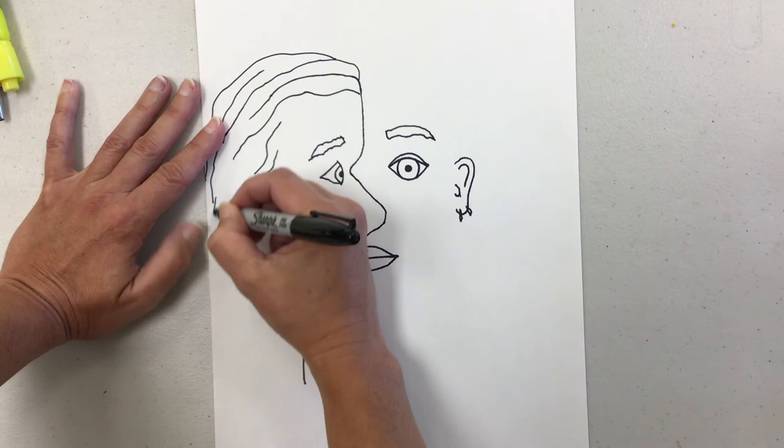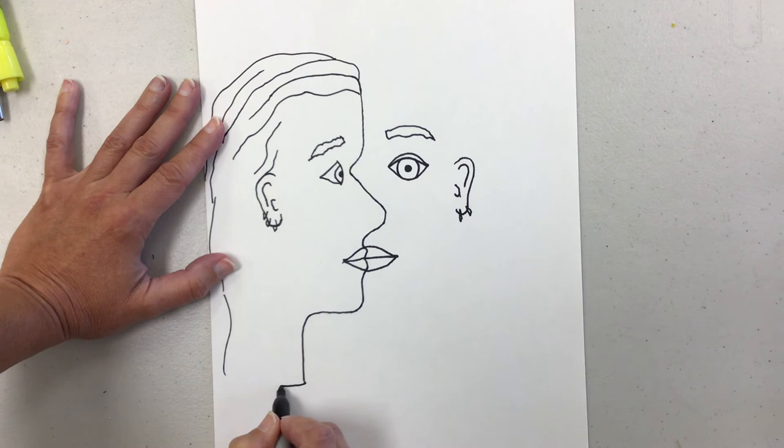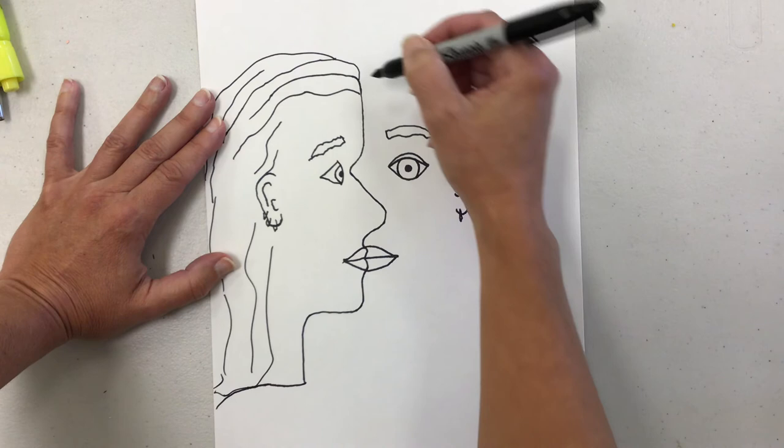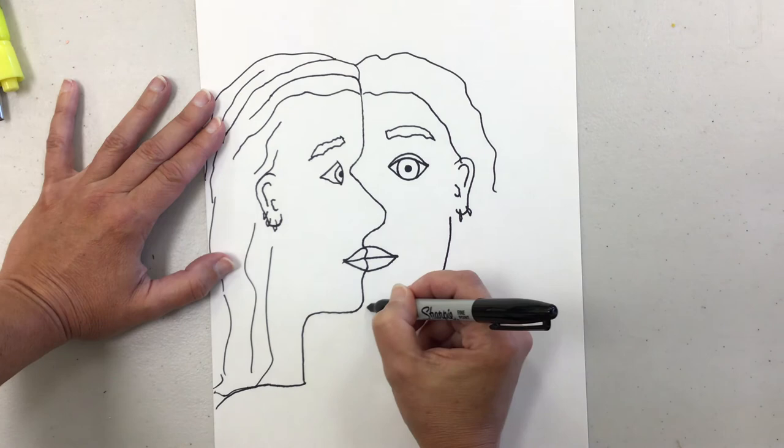And then my hair comes down here. I can make my neck. And this is the top of my shoulder, right? Okay, coming down. There's my hair. And on this side, I can continue my hair down